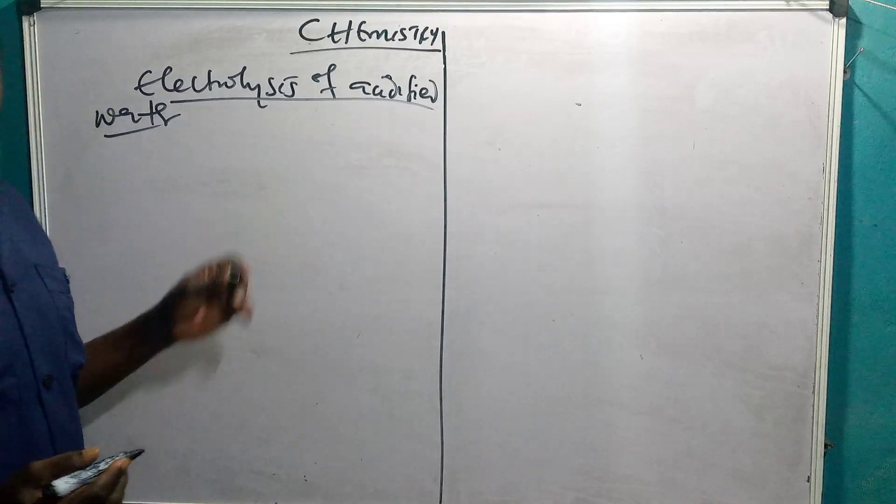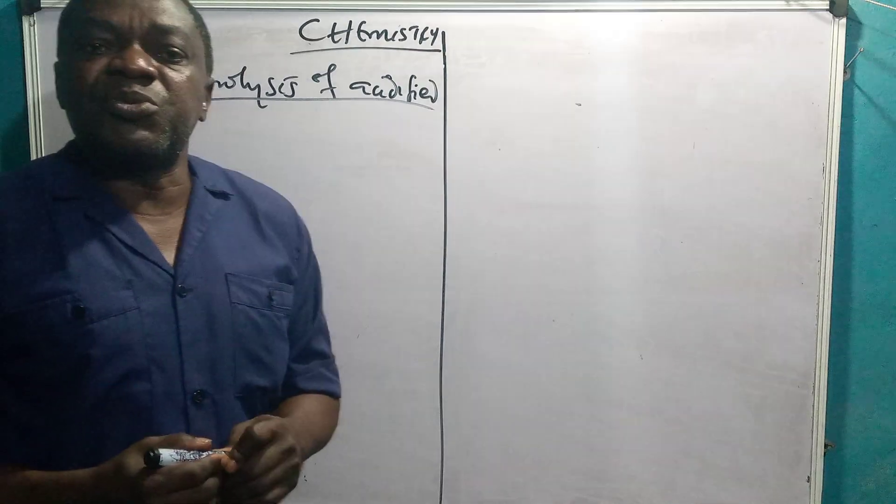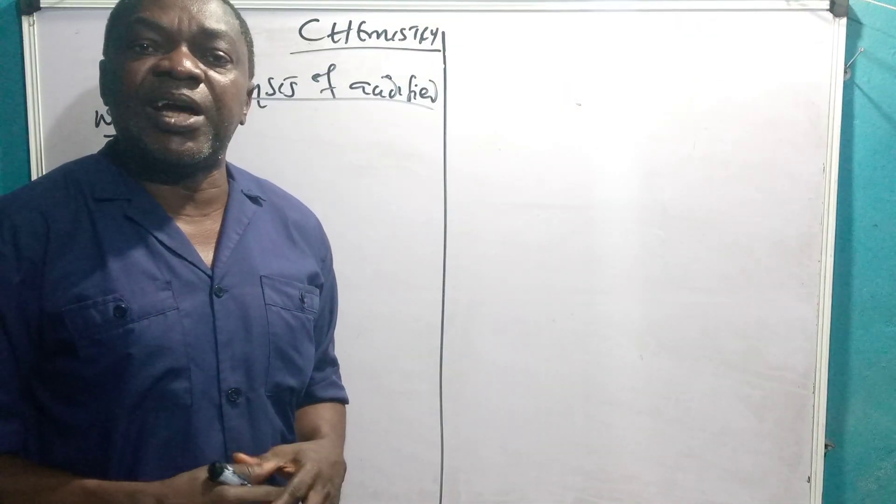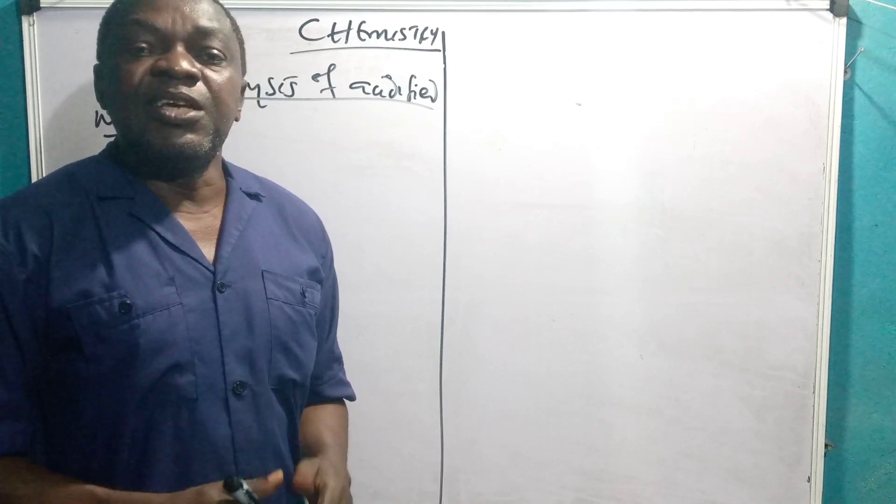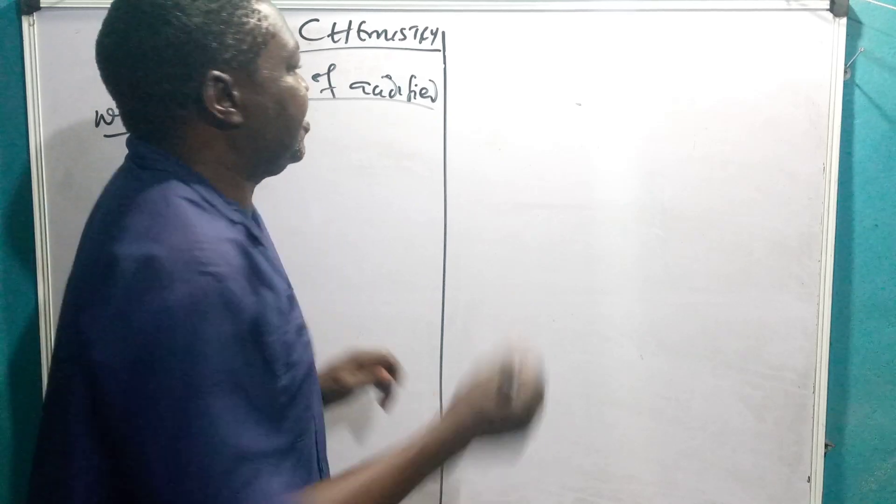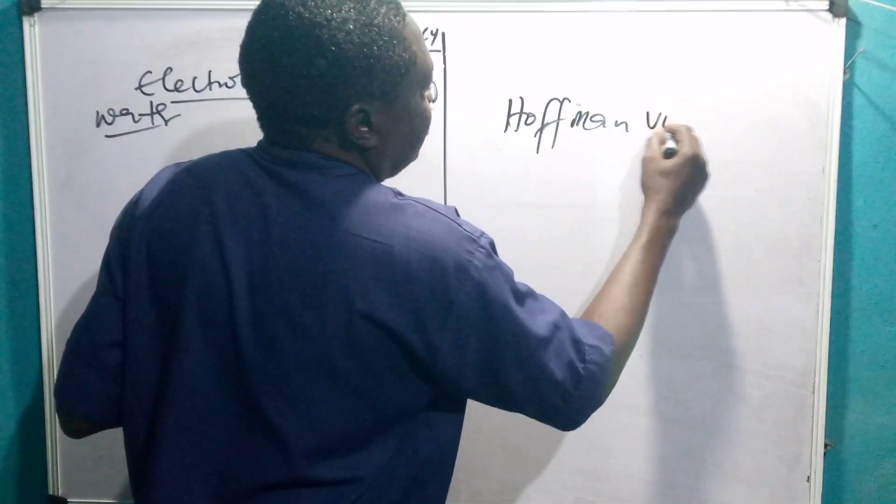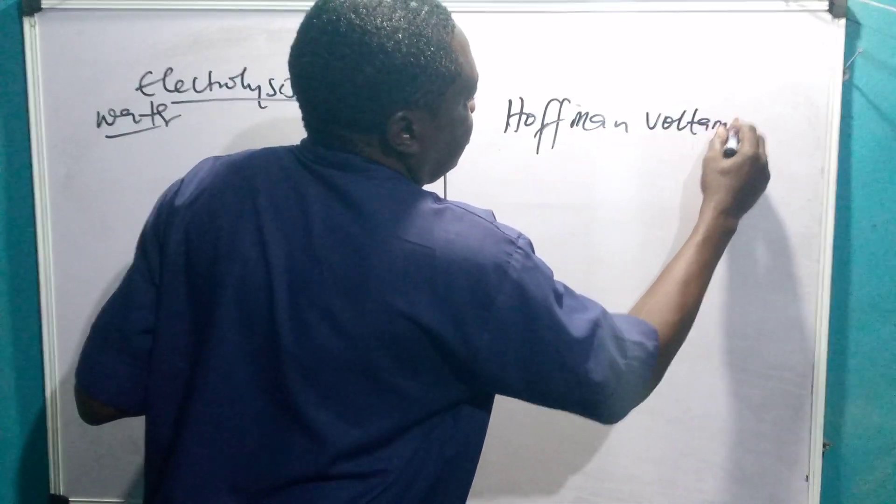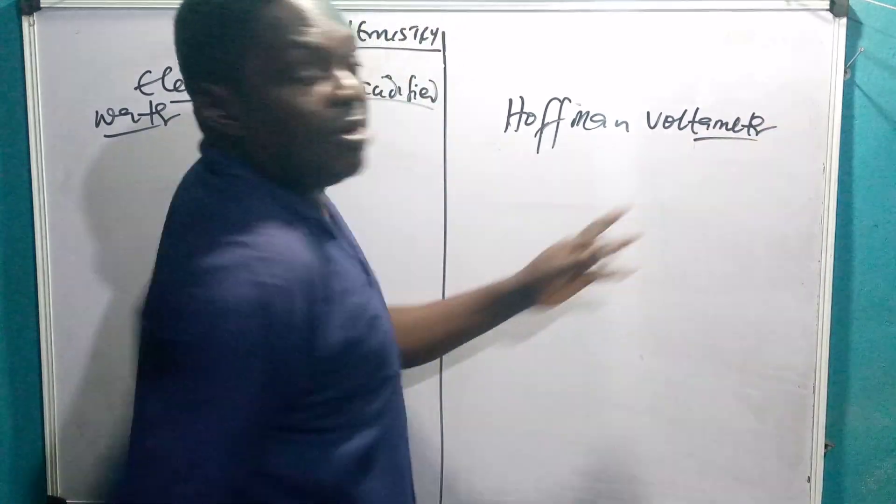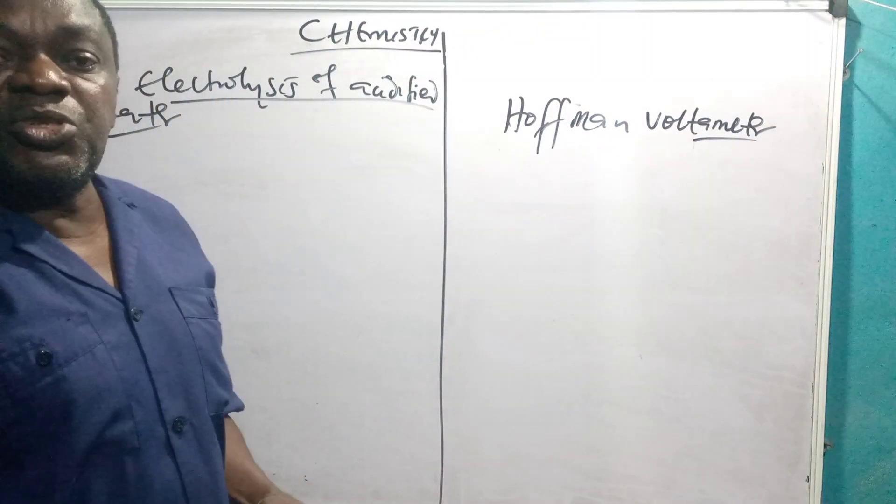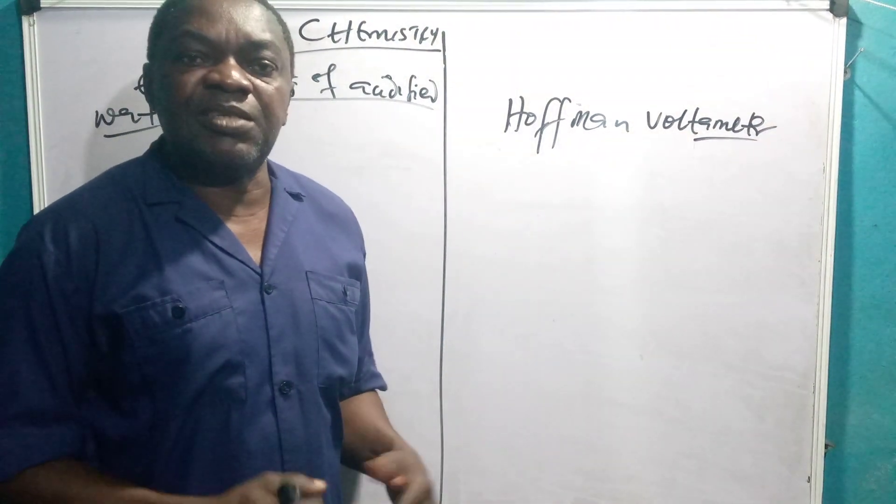So this electrolysis of acidified water, remember the apparatus or the instrument which you can use to carry out the electrolysis of acidified water is known as Hofmann Voltameter. Note this, it is not voltmeter used to measure volt, this one is Hofmann Voltameter, check out the diagrams.